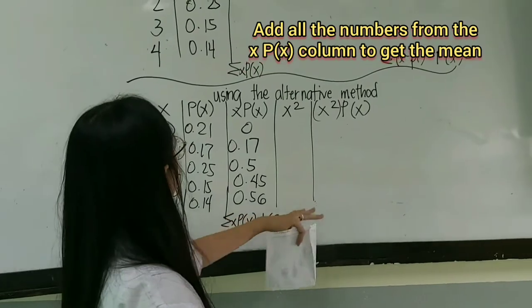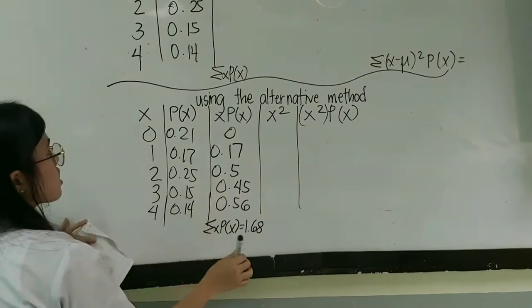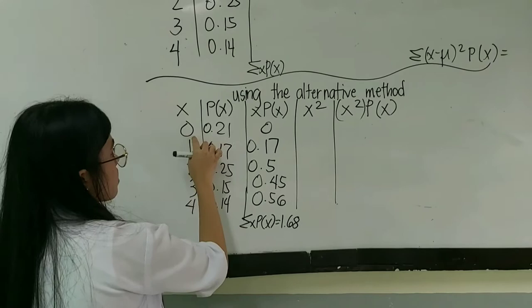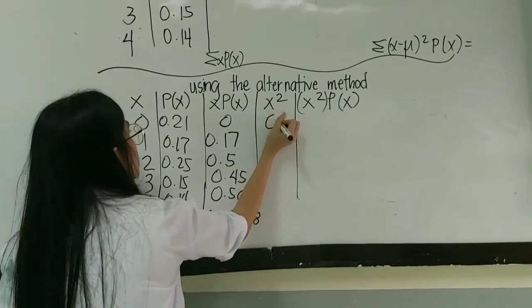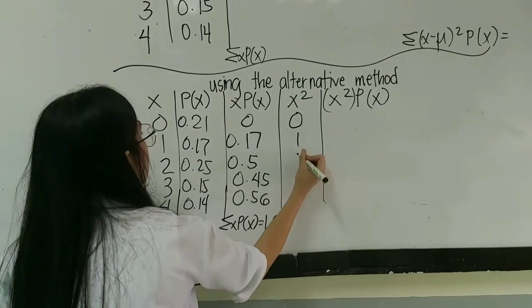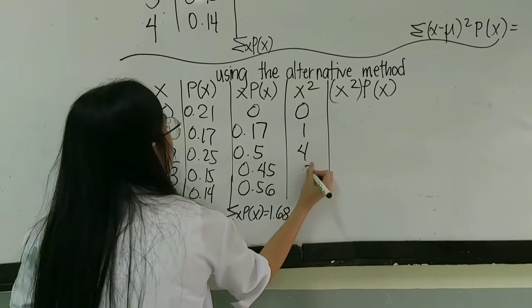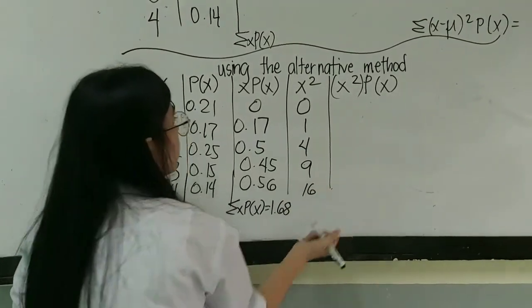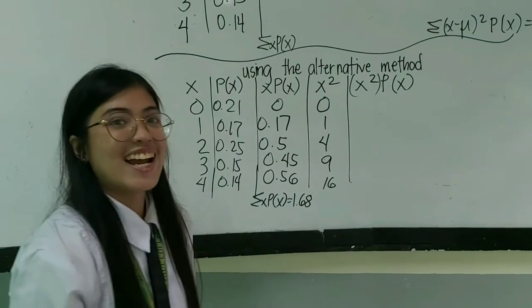And then, for the fourth problem, you'll just square the number of X. Then, 0, then 1, 1, 2, 3, 9, then 0. It's easy, right?